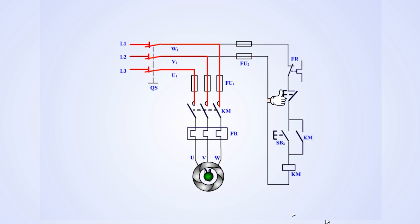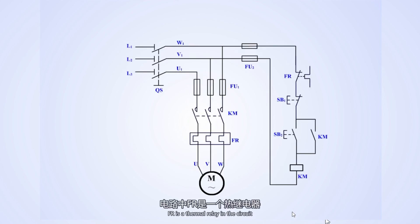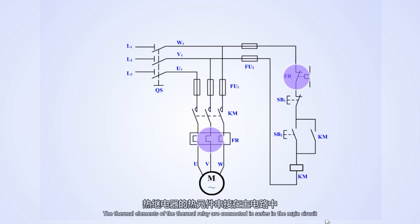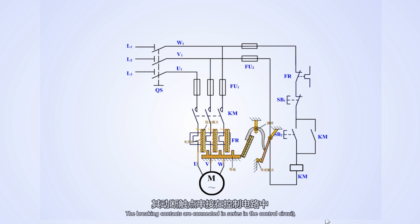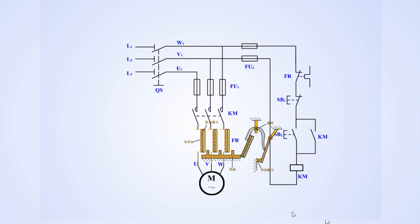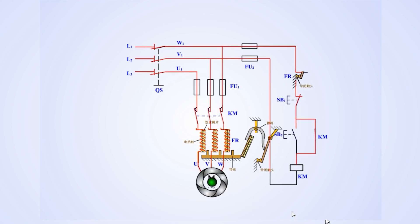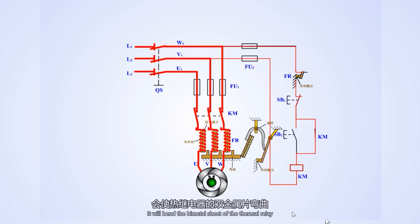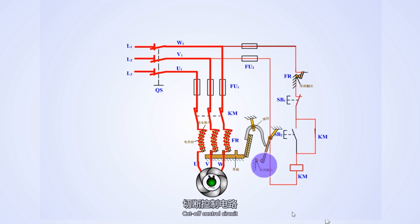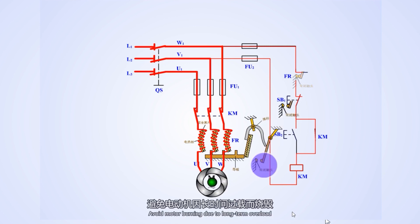To stop the motor, just press SB1. FR is the thermal relay in the circuit, which protects the motor from overload. The thermal elements of the thermal relay are connected in series in the main circuit, and the braking contacts are connected in series in the control circuit. When an overload failure occurs, the current in the motor winding will greatly increase, exceeding the rating. The excess heat will bend the bimetal sheet of the thermal relay, pushing its braking contact to disconnect, cutting off the control circuit, and avoiding motor burnout due to long-term overload.